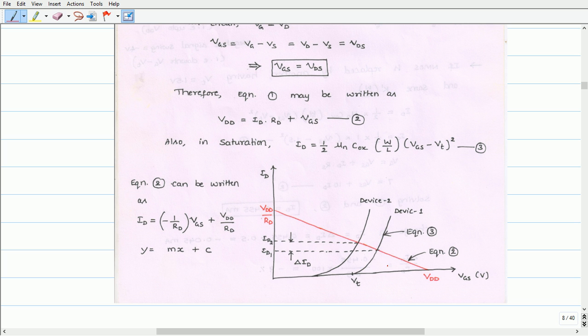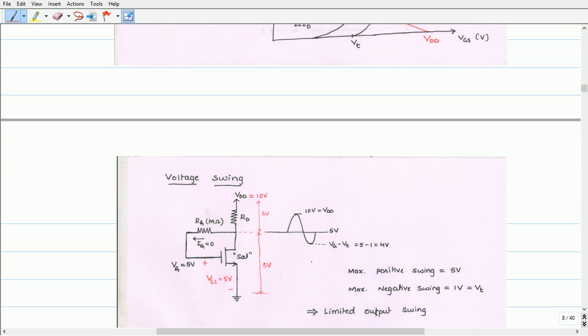From this biasing scheme we came to know that replacement of devices with two different devices, say device 1 and device 2, even though the variations of μn, COX, W/L exist for different devices, the drain current change will be very small. That means the circuit provides constant output. The one drawback that this circuit suffers is limited output voltage swing.